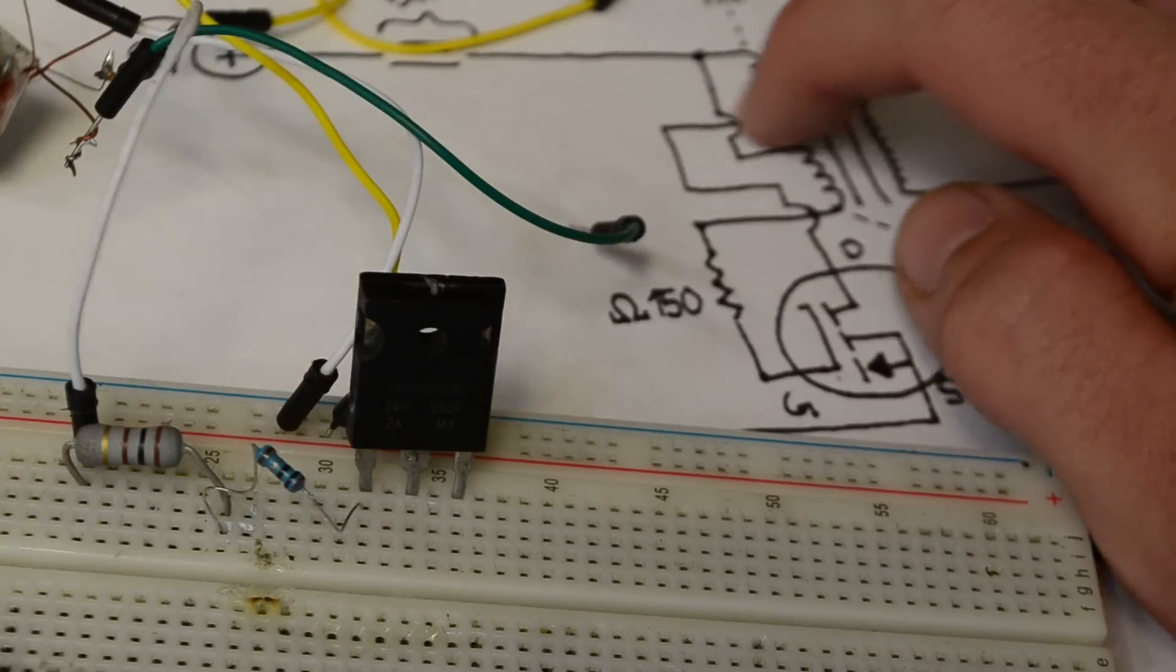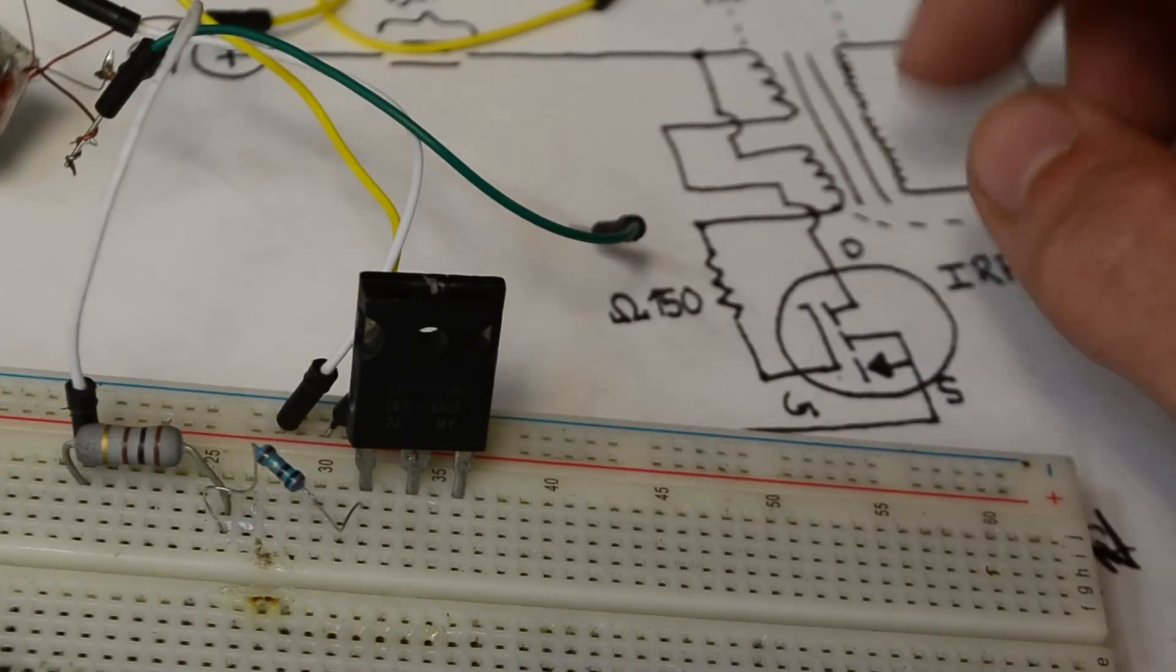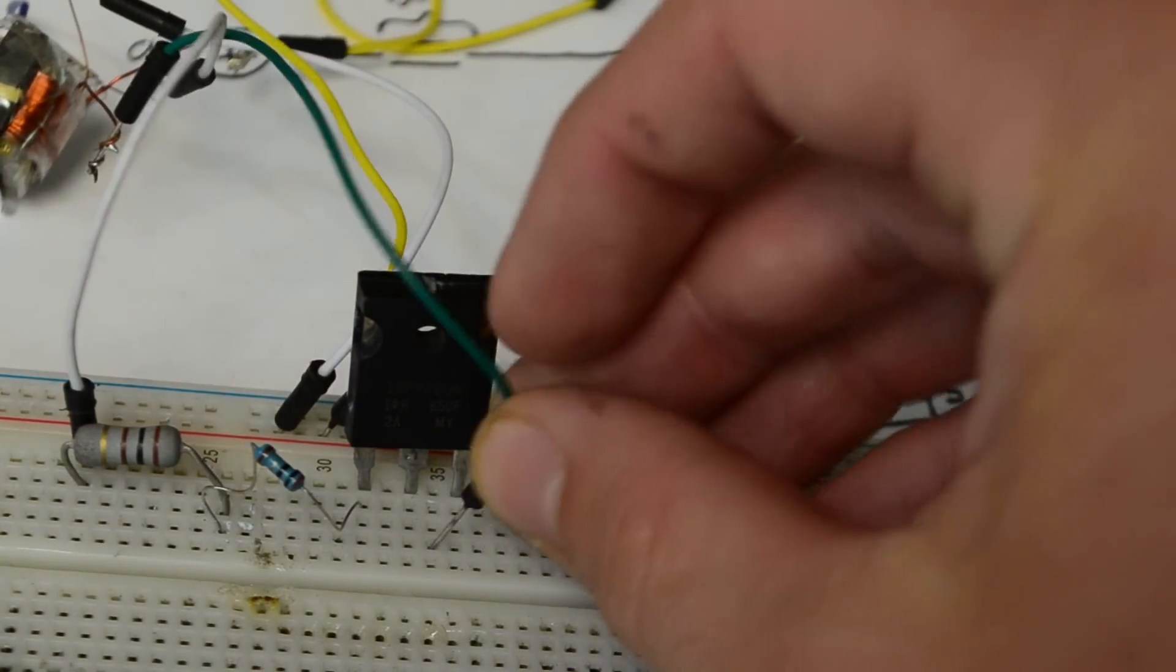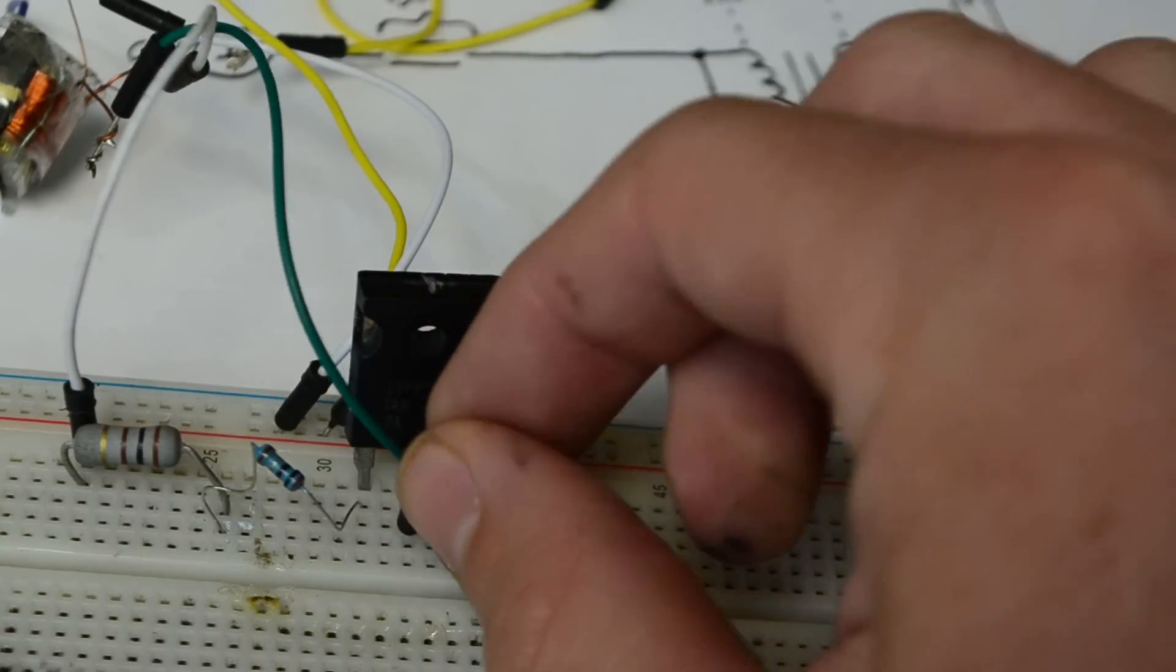According to our schematic, the other end of our primary coil needs to be connected to the drain of the MOSFET. I'll take the green wire for me and connect it to that middle pin.